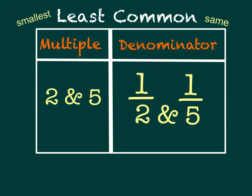Now we're going to look at the words 'multiple' and 'denominator.' The least common multiple and the least common denominator are related because you're actually finding the same information. It's just that when you're looking for a multiple, you're only comparing the two numbers — like 2 and 5 — but when you're looking at the least common denominator, you're changing the denominators.